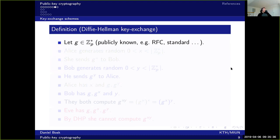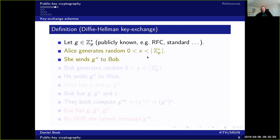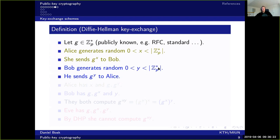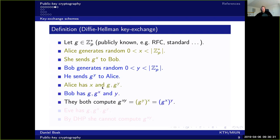The Diffie-Hellman construction works like this: we choose a G in the multiplicative group of integers modulo P. Alice generates a random X - a number between zero and the number of elements in the group - and takes G to the power of X and sends that to Bob. Bob does exactly the same thing: he chooses a Y randomly, same as Alice chose X, and sends G to the power of Y back to Alice. Now Alice has X, G, and G^Y. Bob has G, G^X, and Y. So both of them can compute G to the power of X times Y.